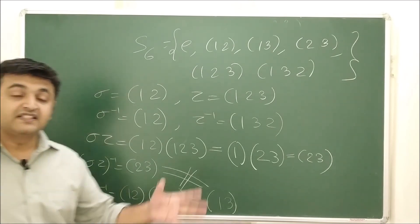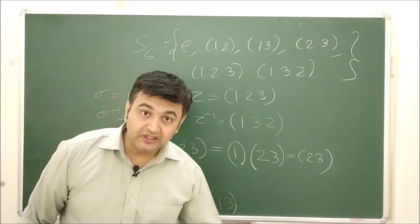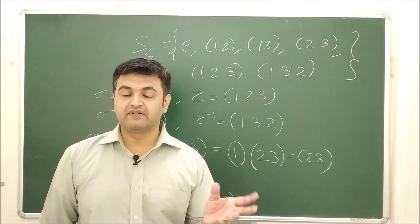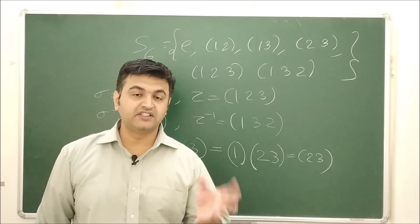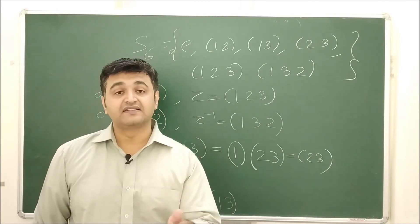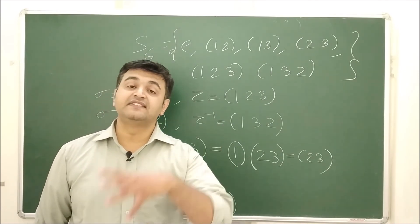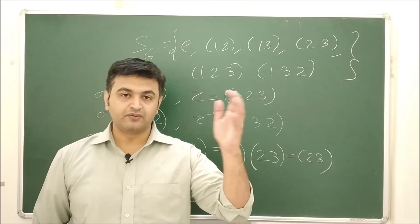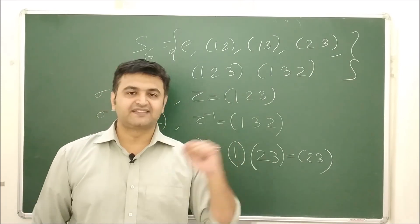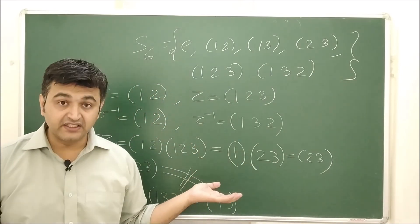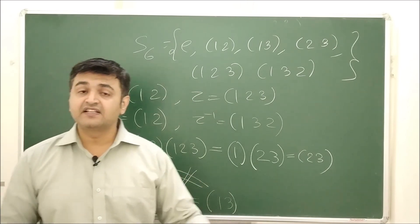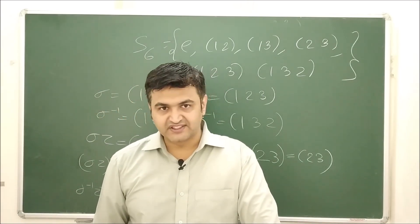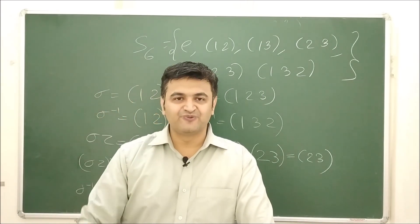Therefore (AB)⁻¹ is not equal to A⁻¹B⁻¹ in general — that is why the theorem states (AB)⁻¹ = B⁻¹A⁻¹. I hope this example is clear. If anything is not clear, you can ask in the comment section. Thank you.